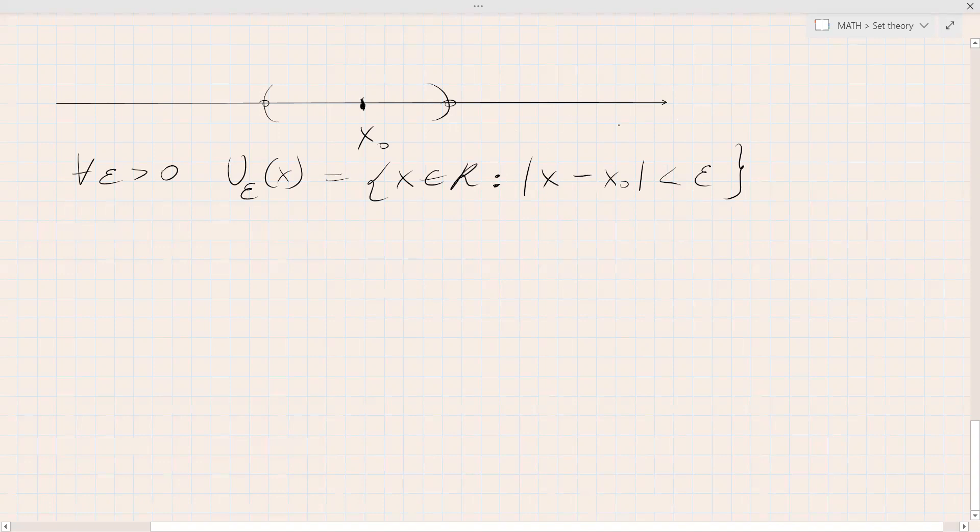When we talk about just a line, just real line or a one-dimensional space, it's basically the same as telling that x belongs to the interval from x_0 minus epsilon to x_0 plus epsilon. So we may write this here: x_0 minus epsilon from this point to x_0 plus epsilon to that point.